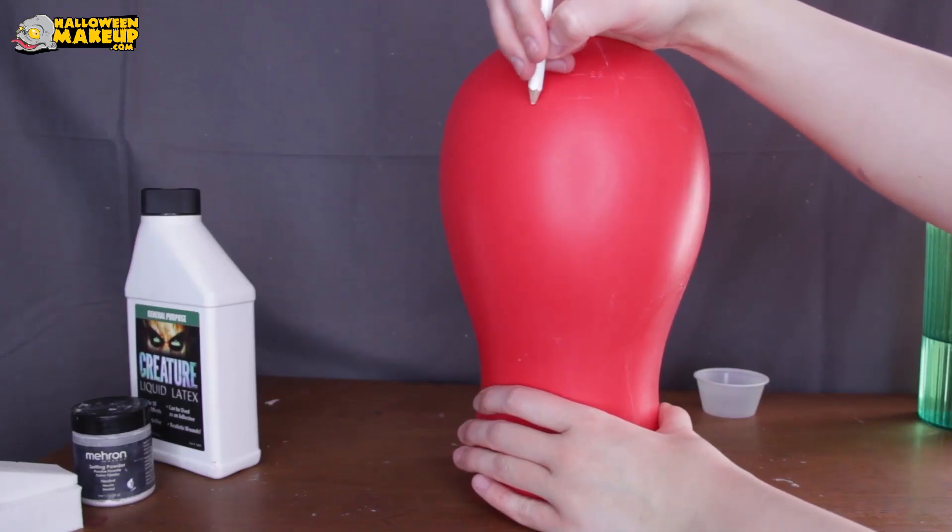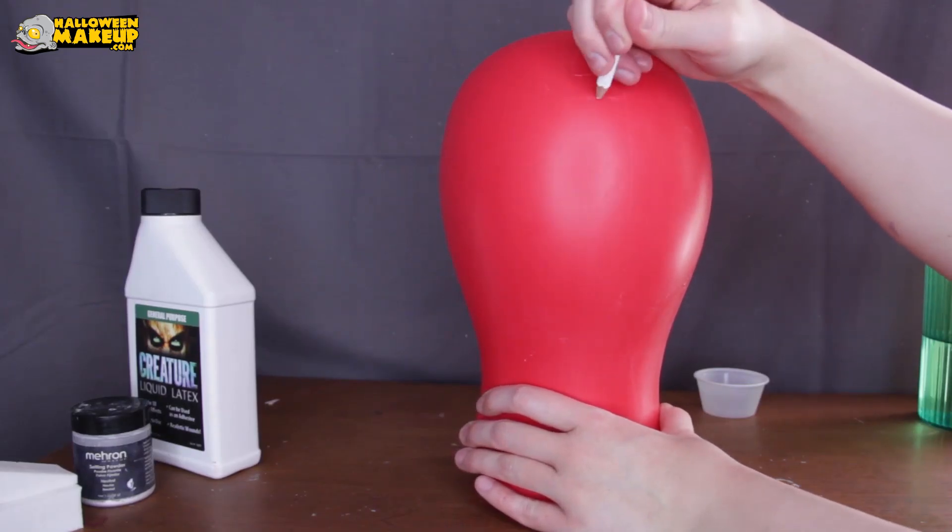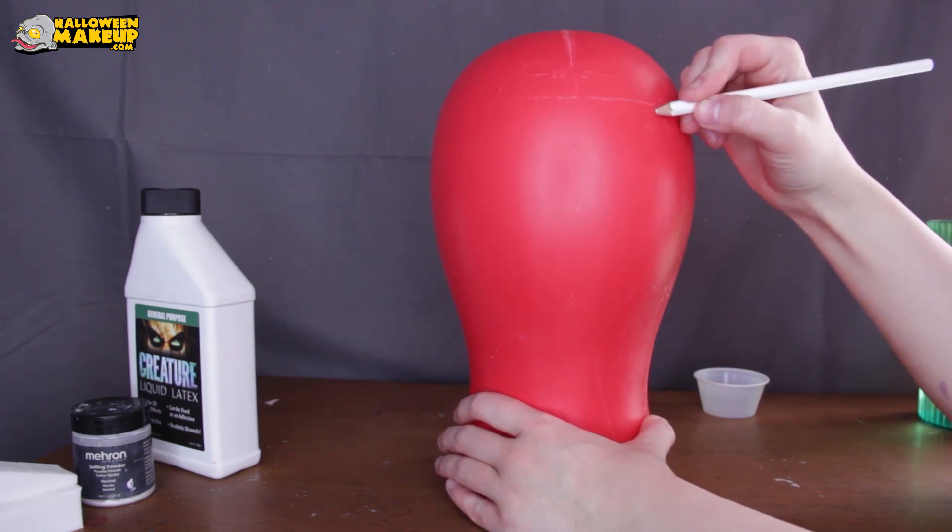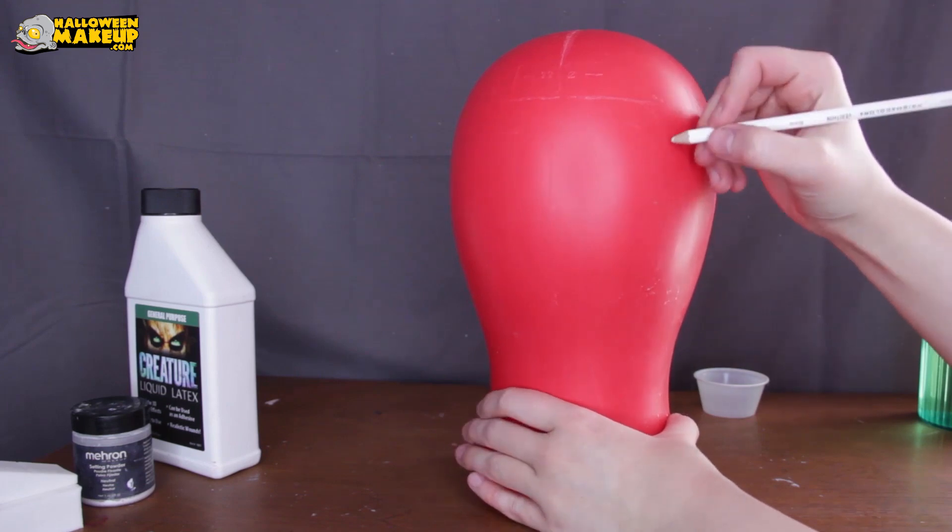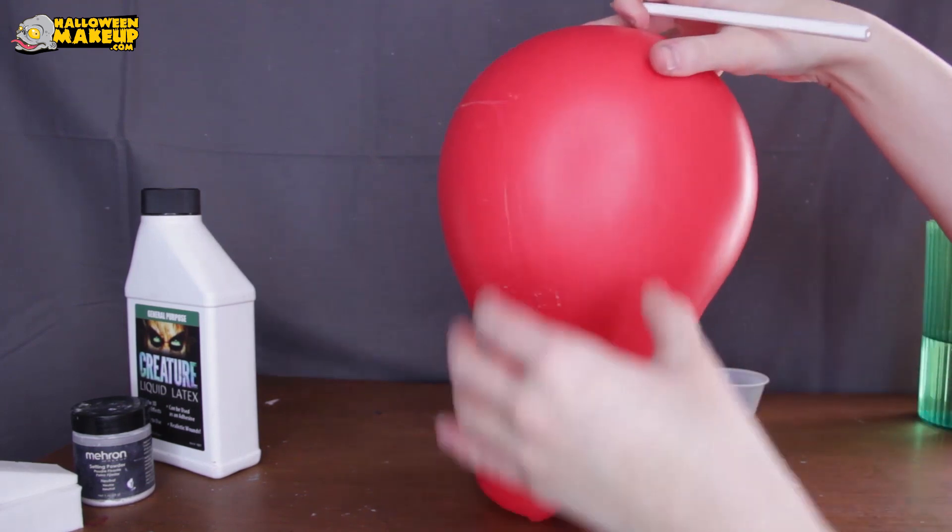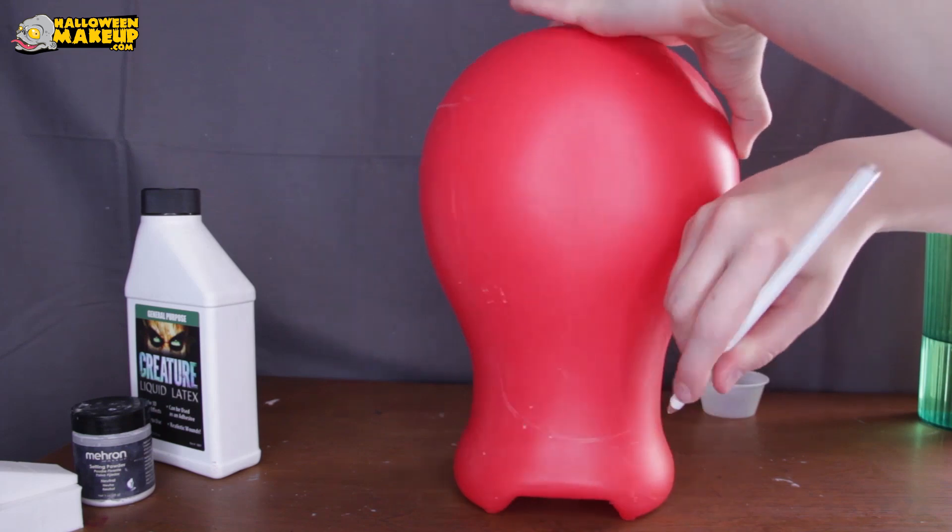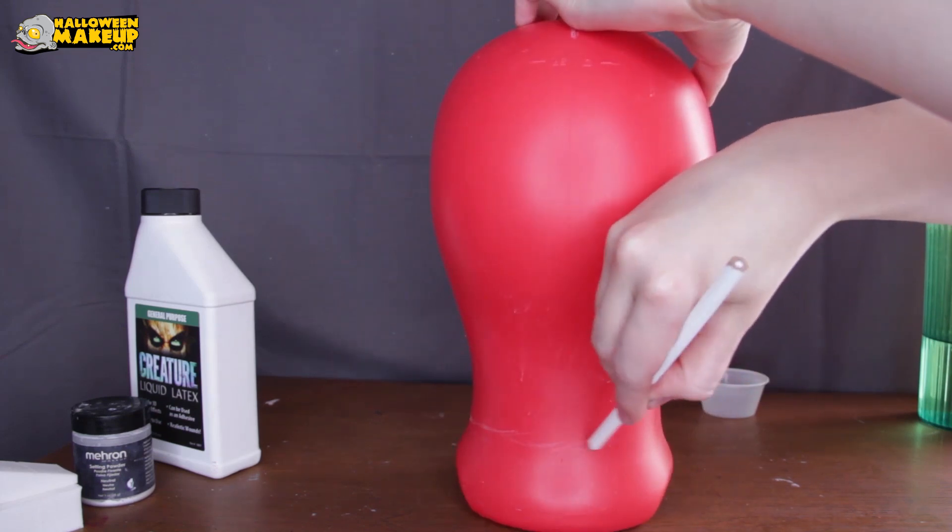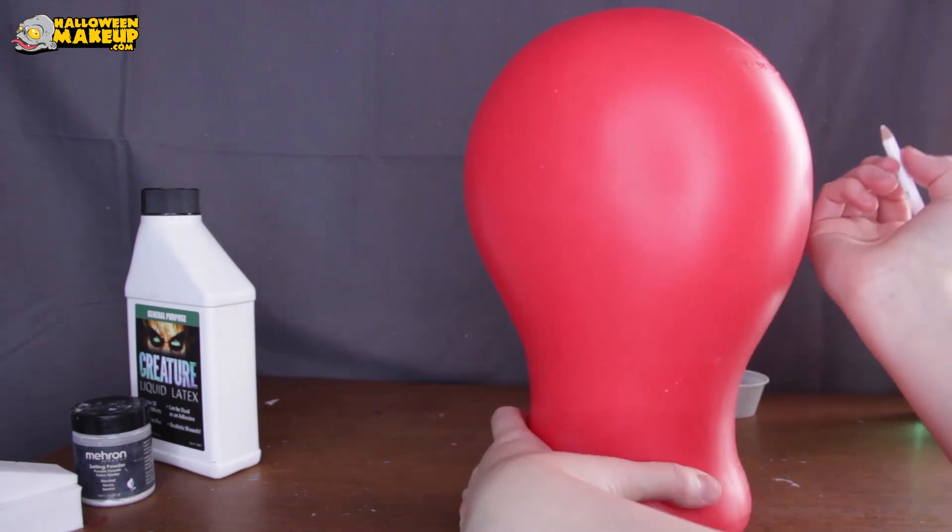First I take my white pencil and I map out exactly where I'm going to want my latex. I like to bring my bald caps basically all the way down to my neck because I feel like most of us have hair that goes down a little bit. I can't be the only person like that, so I like to bring mine all the way down.